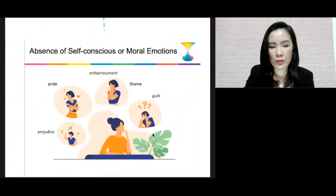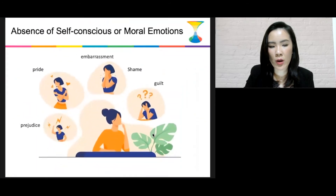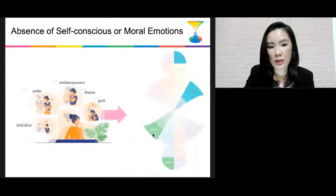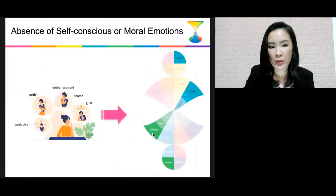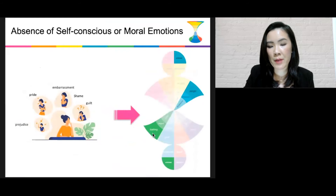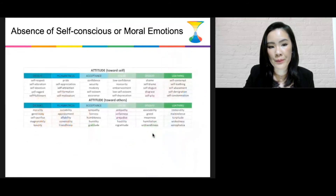There is also the absence of self-conscious and moral emotions such as pride and shame. In the new model, we include them. They are now under the dimension of attitude. For this dimension, we also have sub-dimensions of attitude towards self and towards others.